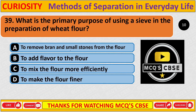Question: What is the primary purpose of using a sieve in the preparation of wheat flour? Correct answer is A: To remove bran and small stones from the flour.